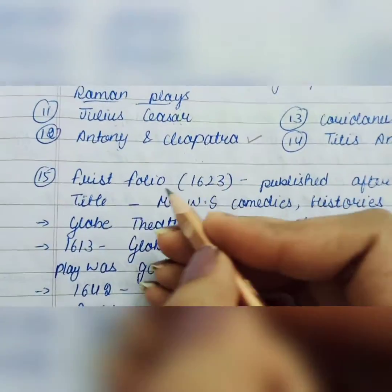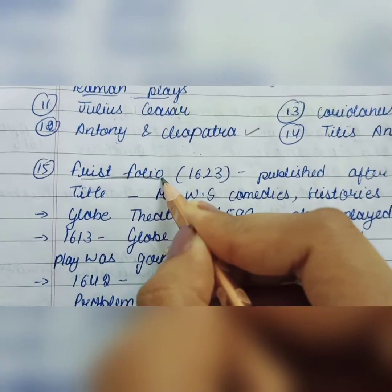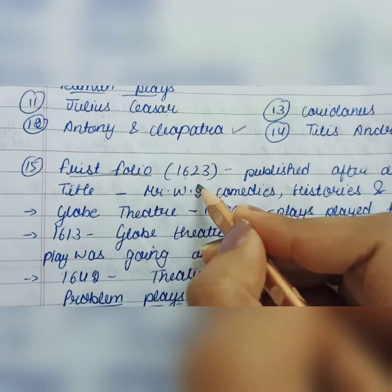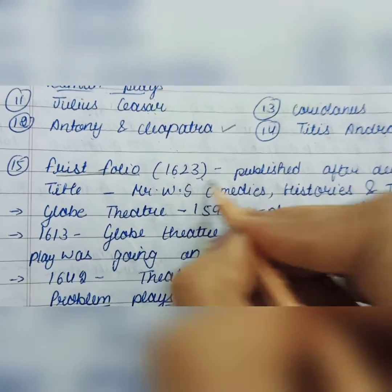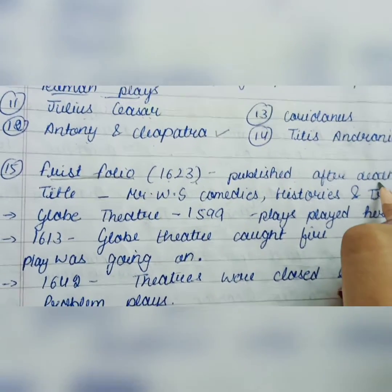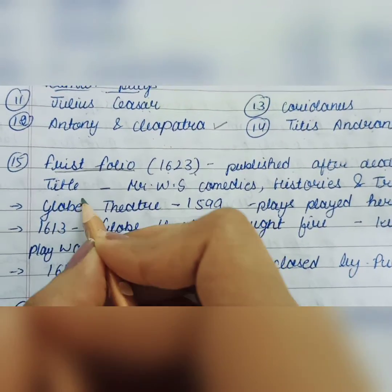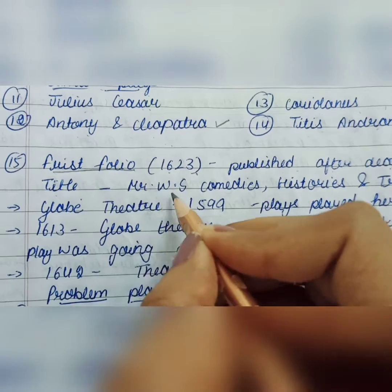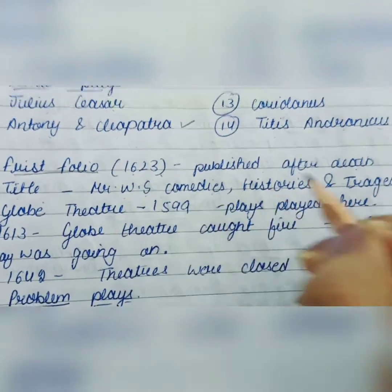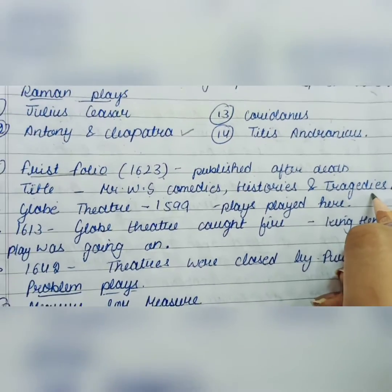The First Folio was published in 1623, after the death of William Shakespeare. Its title was 'Mr. William Shakespeare's Comedies, Histories and Tragedies.'